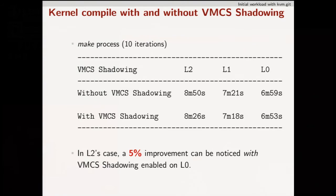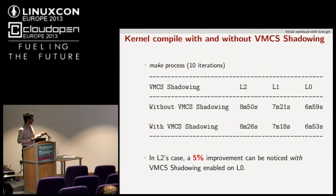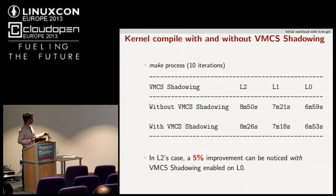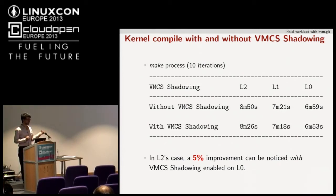Here are results with VMCS shadowing enabled and disabled across L0, L1, and L2. Without focusing too much on the numbers, you can see a roughly 5% improvement with VMCS shadowing enabled on L0. The compilation time difference between the two is not very large, but I confirmed with the Intel nested virtualization authors that this is reasonable, and it was also discussed on the KVM mailing list.